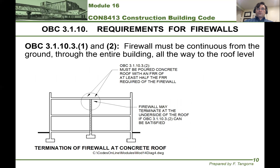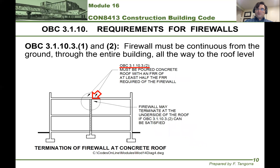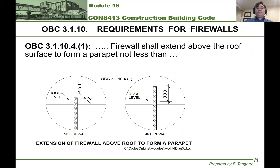Firewalls also have to be continuous, meaning they go all the way from the top of the footing all the way to the roof. In this case, you can see that it stops at the roof, but that's because under the requirement of 3.1.0.10.0.32, the roof is poured as concrete. However, if that's not the case, then your firewall must go through the roof to create a parapet. As you can see in these two images, the parapet can either be 150 millimeters tall or 900 millimeters tall.